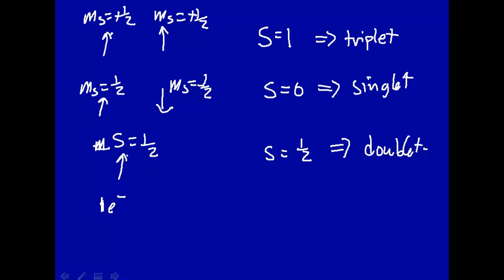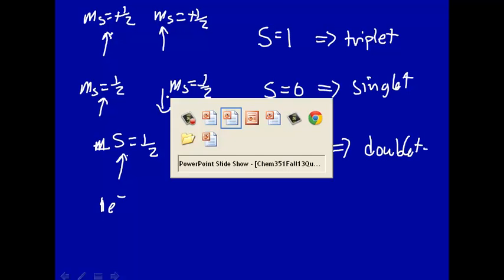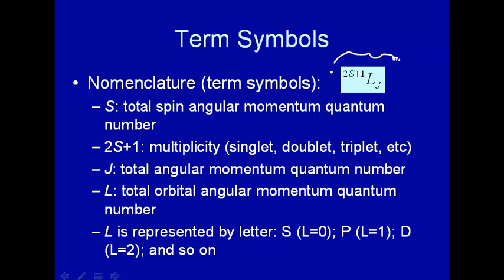Okay, so those are term symbols. It just is a way to codify the value of S and L and J that we get by Russell-Saunders coupling. Note that if you're looking at J-J coupling, the strong coupling, then the term symbols don't apply because you don't have a big value of S and a big value of L. This only works for Russell-Saunders coupling. The term symbols—there's another set of term symbols if you have the more strong coupling case, J-J.